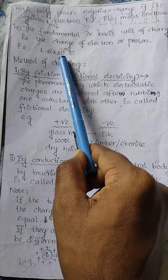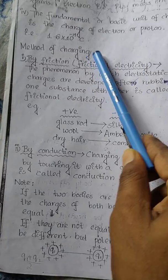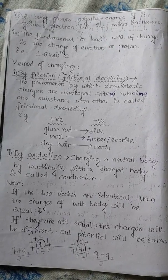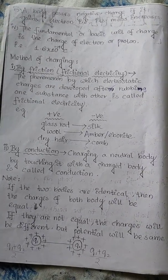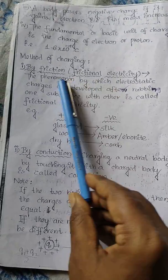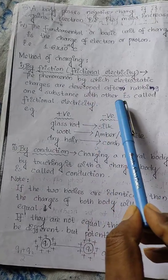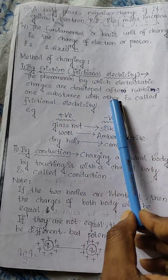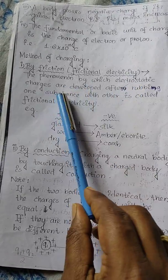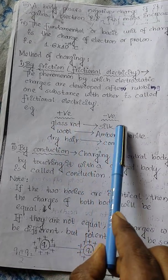Method of charging by friction, or frictional electricity: when two bodies are rubbed together, electrons are lost or gained in the process. This is called frictional electricity. Insulators can be charged very well this way, while conducting bodies cannot. This is one of the ways electricity charges are developed after rubbing one substance with another.